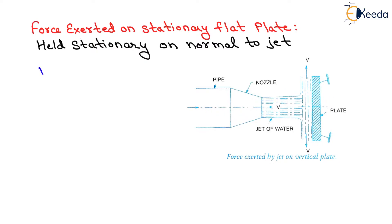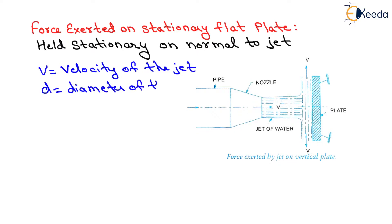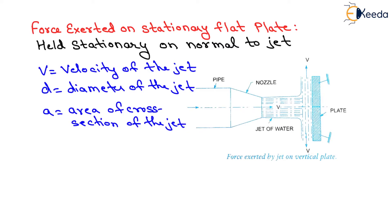Now we will write v equals to velocity of the jet, d is the diameter of the jet, and a will be the cross-sectional area of the jet. So we will write small a equals to area of cross section of the jet, which will be equals to pi by 4 into d square. The jet after striking the plate will move along the plate, but the plate is at right angle to the jet, as shown here.